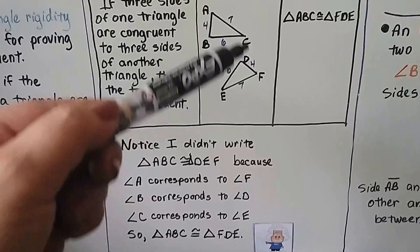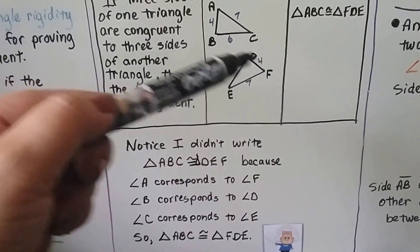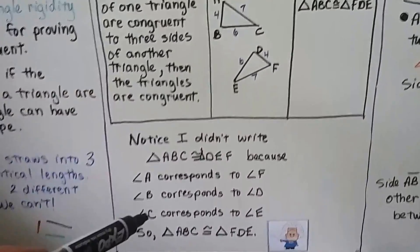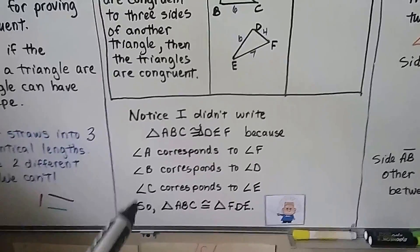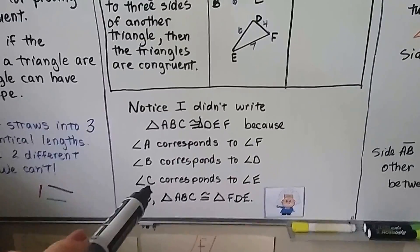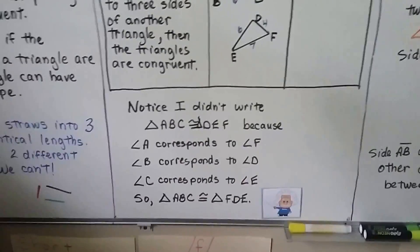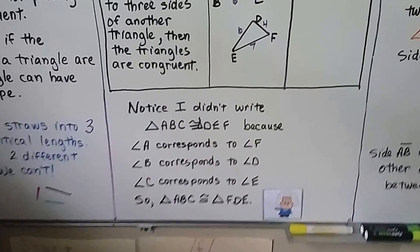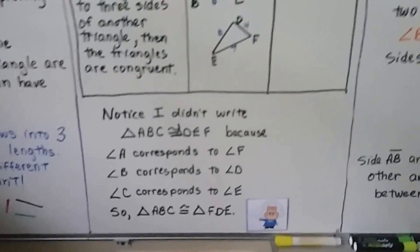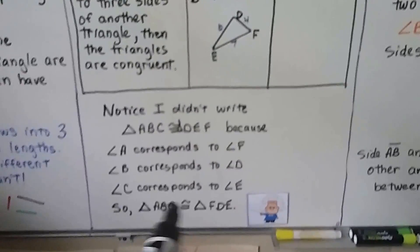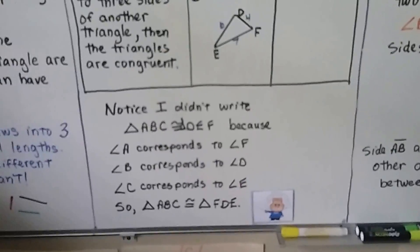Angle B is corresponding to angle D, and C is corresponding to E. So our triangle ABC is congruent to triangle FDE. We have to make sure that they're written in the order of the corresponding angles.